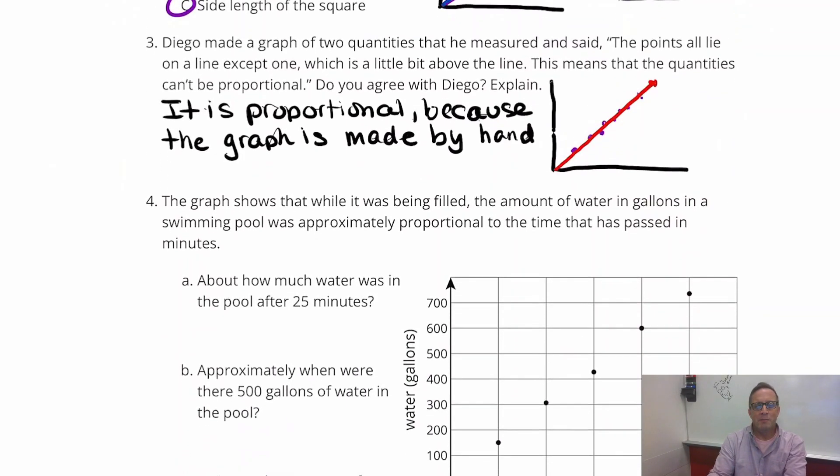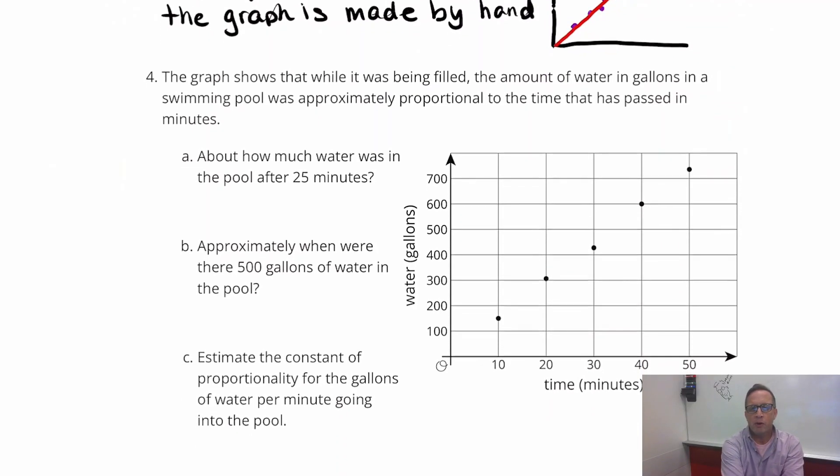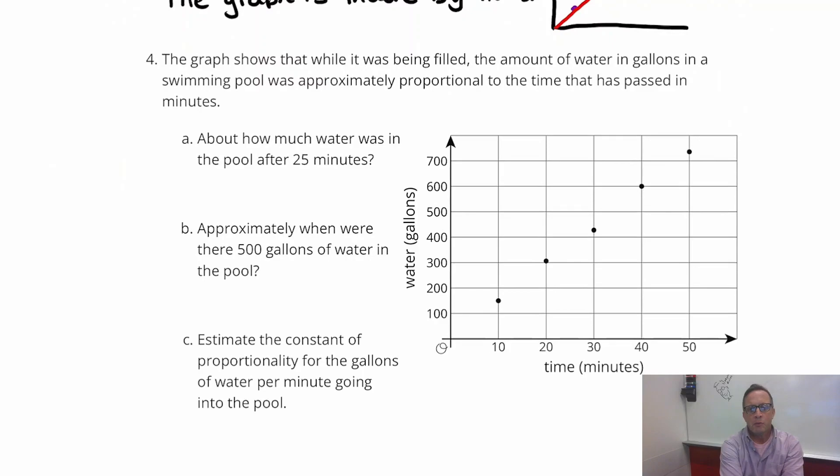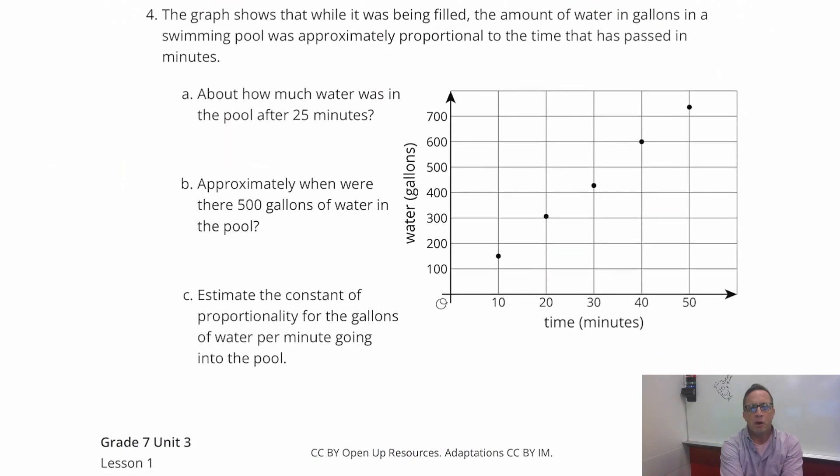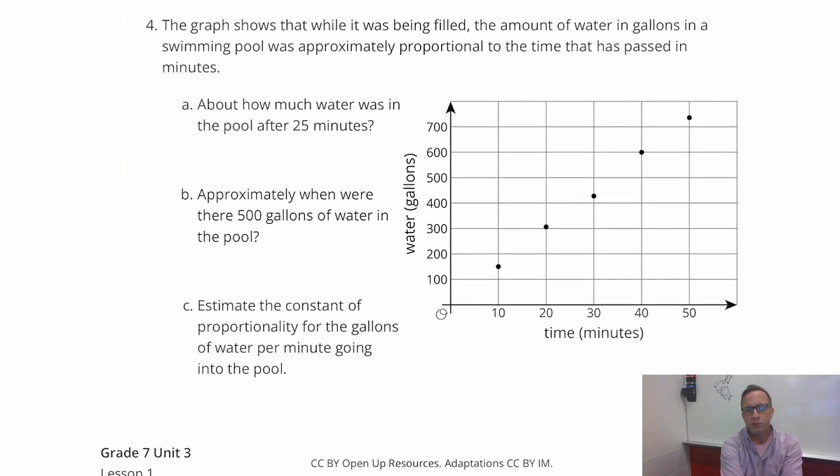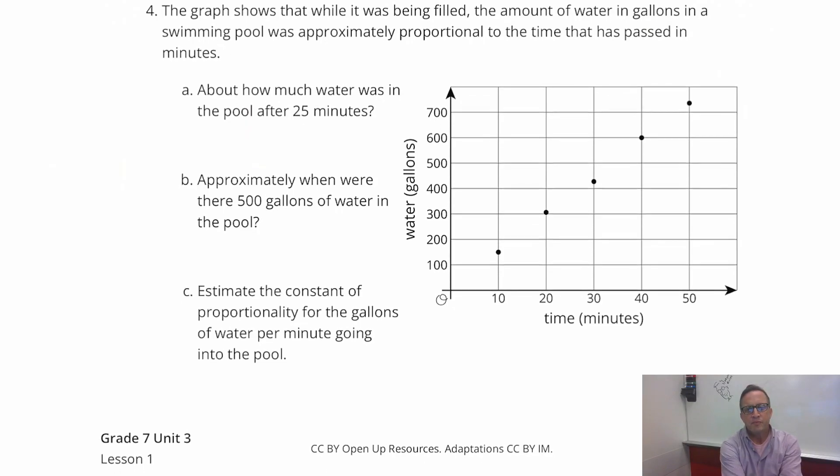Number four. This graph shows that while it was being filled, the amount of water in gallons in a swimming pool was approximately proportional to the time that passed in minutes. So about how much water was in the pool after, this is for question A, about how much water was in the pool after 25 minutes.